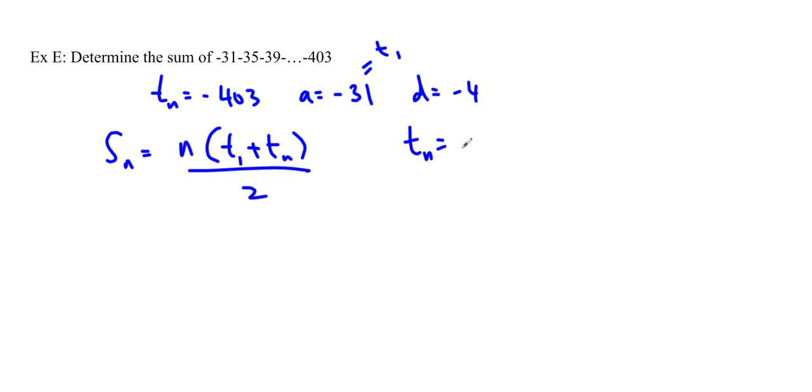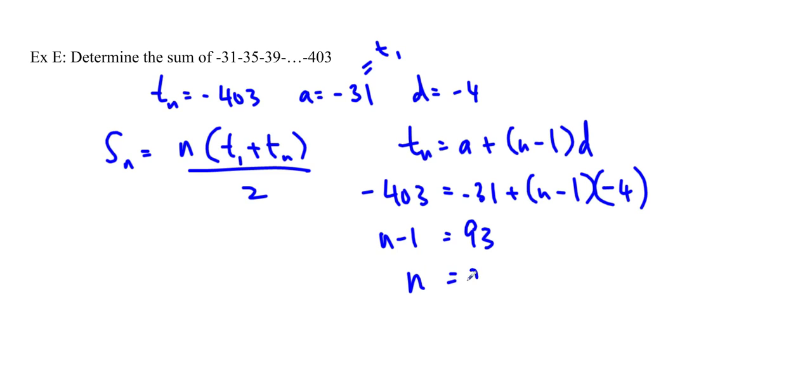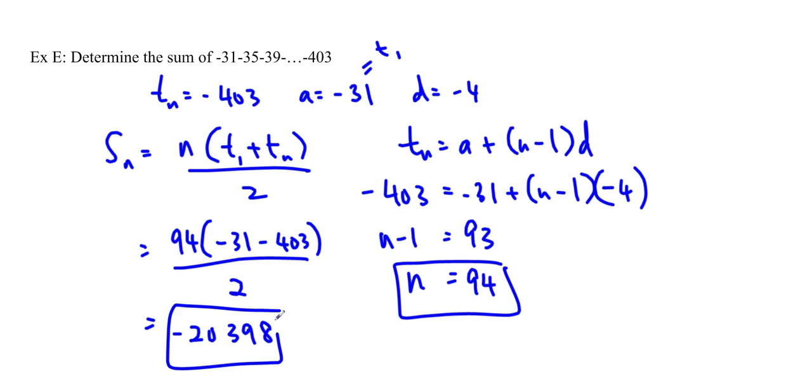So we can use T sub n is equal to a plus (n-1) times d. And just plug in the numbers here, and we'll solve for n. That's the first thing we want to do. Plus (n-1) times -4. Make sure you put brackets around it, otherwise it looks confusing. We end up with n-1 is equal to 93, so n is equal to 94. So that's the number of terms we have. And we can just plug that in now. So 94 times (-31 - 403) divided by 2 gives us -20,398. So that's the sum of this series.